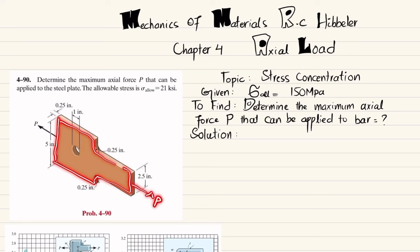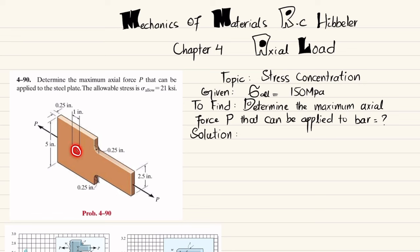You can see this is a steel plate subjected to axial loading P, and the allowable stress is 21 ksi. All the dimensions are given: the maximum height is 5 inches, the minimum height is 2.5 inches, the thickness is 0.25 inches, the diameter of the hole is 1 inch, and the fillet radius is 0.25 inch.